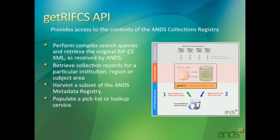These are quite well documented. The first service is the GetRIVCS API, and this is a way to get access to the contents of the collections registry itself via the service. You can perform quite complex searches of the registry to pull back specific records, or records in a specific group based on specific subjects and things like that.